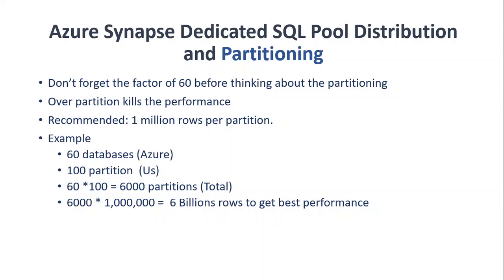You might wonder: if Azure dedicated SQL pool automatically handles distribution into 60 partitions, do we still need to do manual partitioning? The answer is yes — in some cases you still need to partition yourself. When doing so, you must account for that factor of 60 existing distributions. Over-partitioning can kill performance because if you have thousands of partitions multiplied by 60, queries have to scan too many partitions and results become very slow.